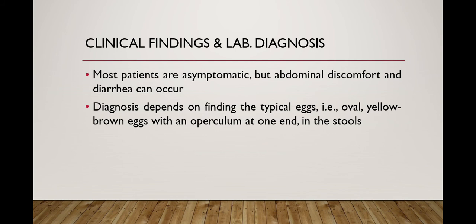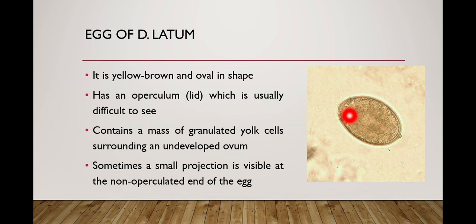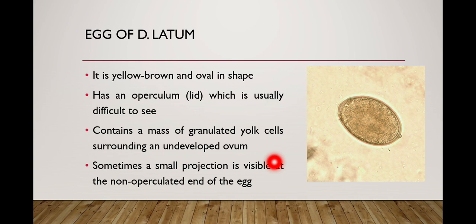Diagnosis depends on finding the typical eggs, which can be examined under the microscope in the feces of the infected person. The egg of D. latum is yellow-brown and oval in shape. It has an operculum — a lid-like structure — at one end, which is usually difficult to see. It contains a mass of granulated yolk cells surrounding an undeveloped ovum at the center. Sometimes a small knob-like projection is visible at the non-operculated (opposite) end of the egg.